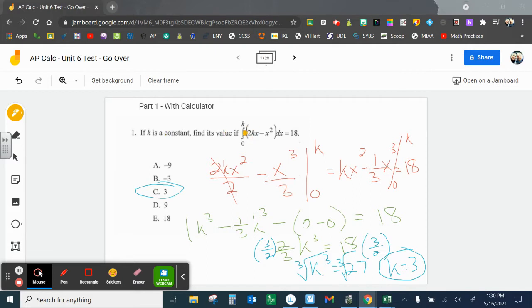So k is a constant, find its value. The integral from 0 to k of a function, and we know it's equal to 18. So I'm going to do the antiderivative of the function, 2kx squared divided by 2. The 2's cancel out, so I get kx squared, then minus x cubed over 3. We're evaluating from 0 to k, and at the end we know it's equal to 18.